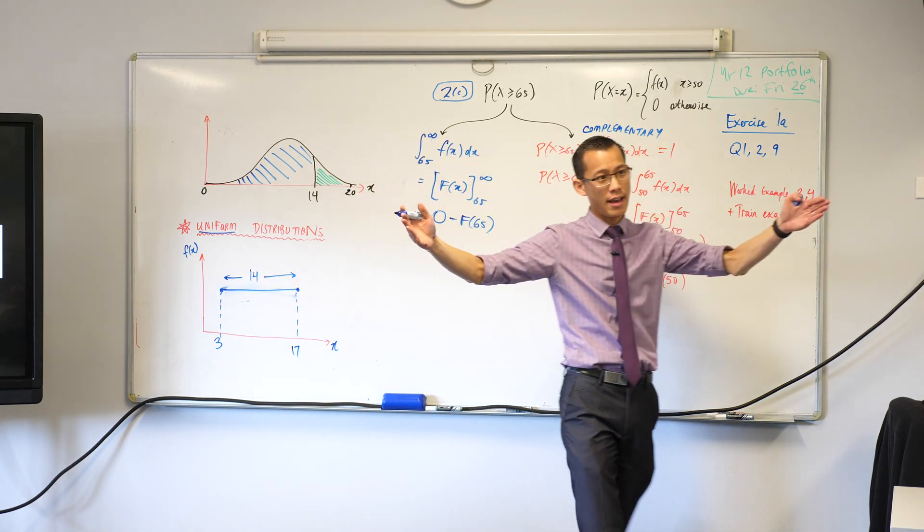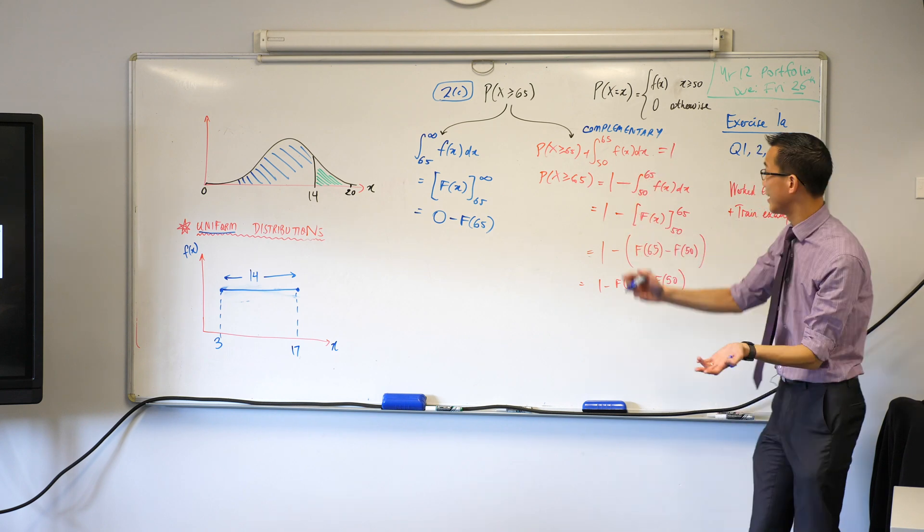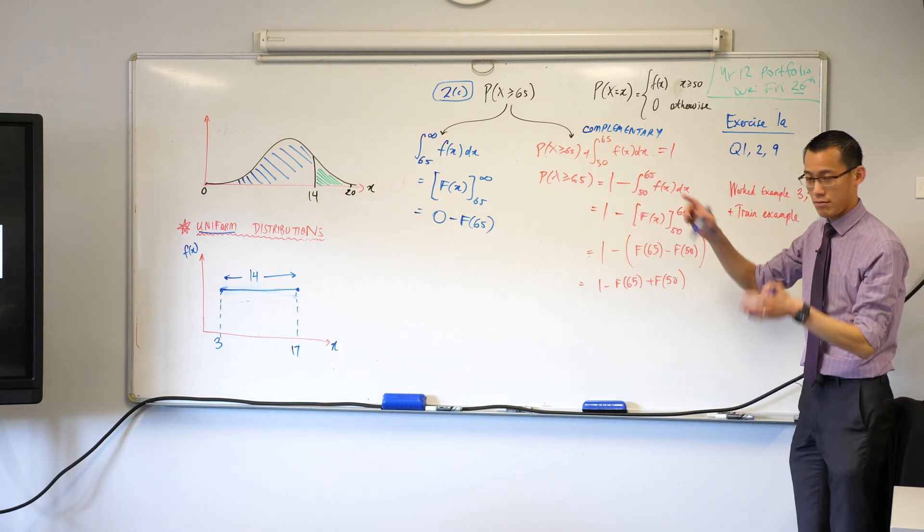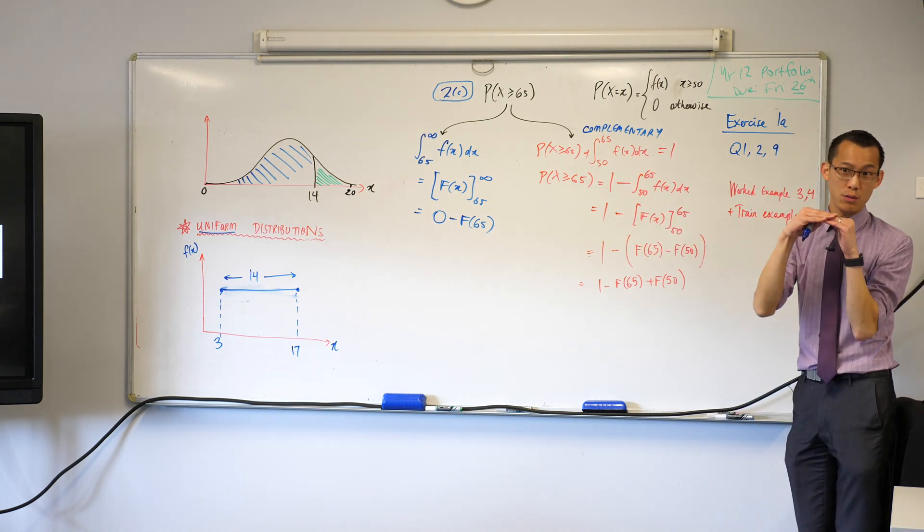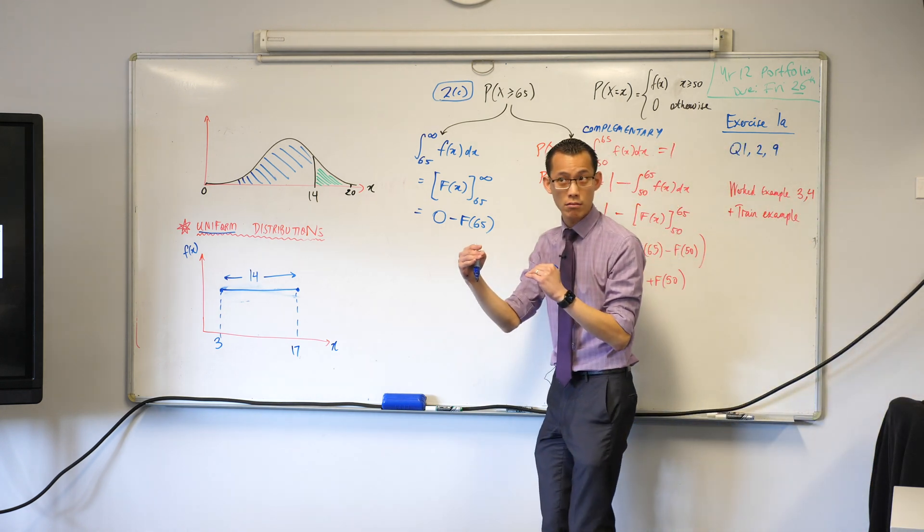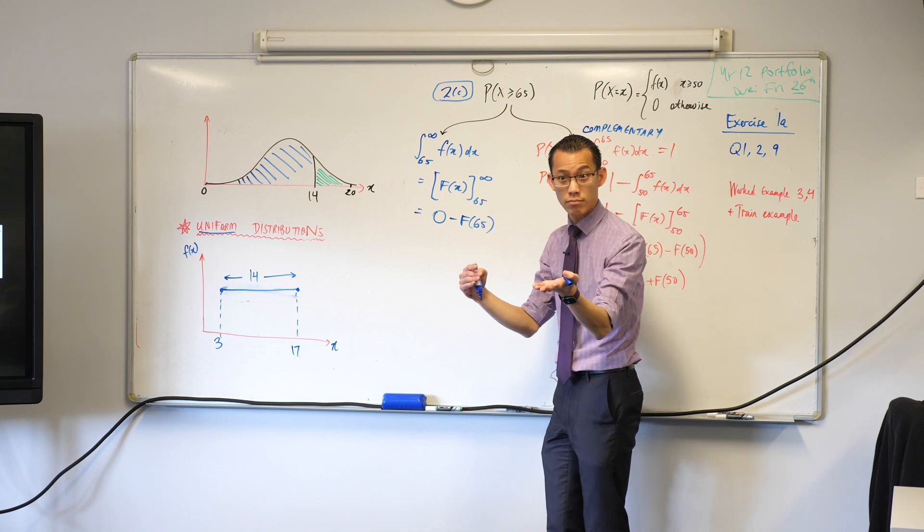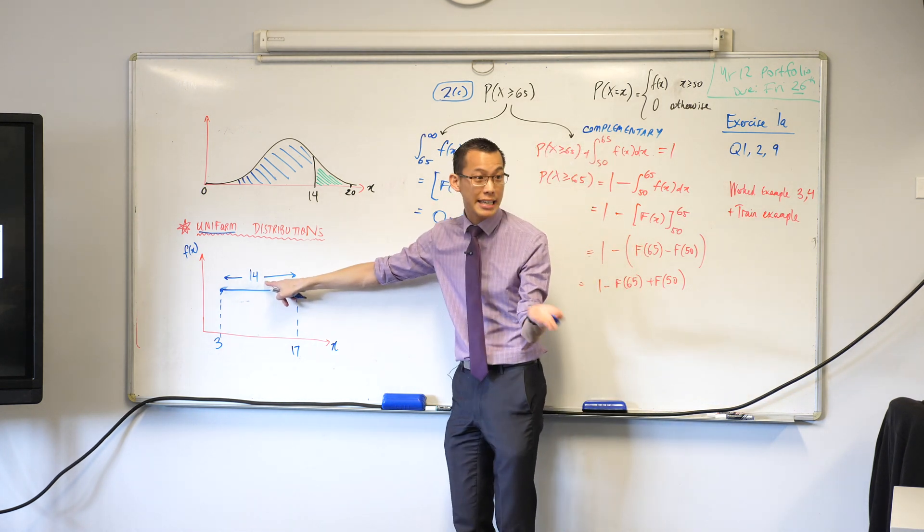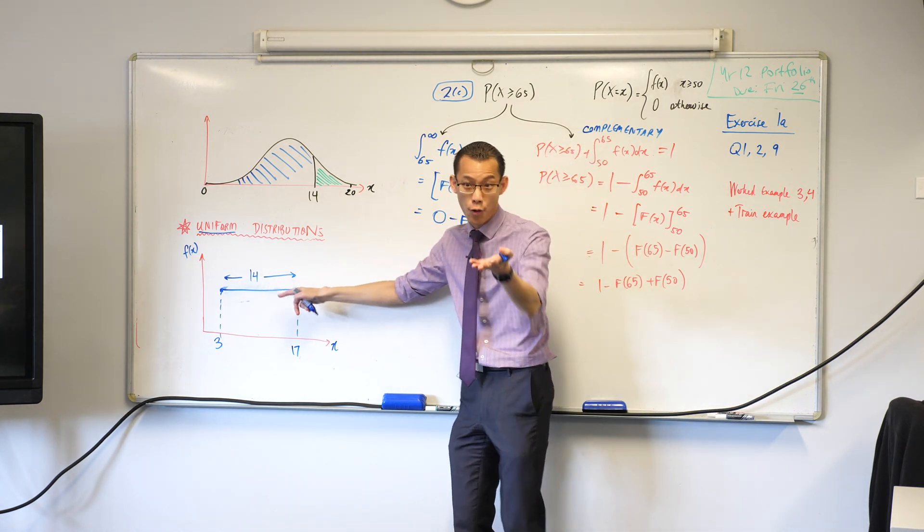But because that's 14, and I know the total probability equals 1, you've got the width of the rectangle, so you can therefore just work out the height. What's it equal to? 1 over 14. I've got to multiply by this and get 1. Do you agree with that? 1/14, very good.